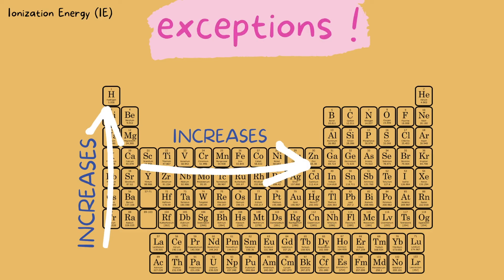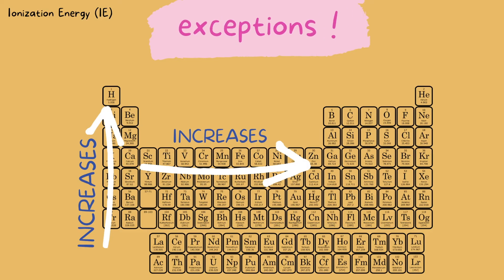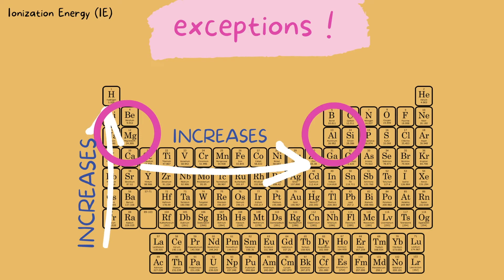Now, unfortunately, there are a few exceptions. I'm including these because I know a variety of students will be using this video to study. If you are in high school or college chemistry, you do need to know these exceptions. However, if you are here strictly for the TEAS exam, in my opinion, you don't need to know these. These exceptions involve beryllium, magnesium, and calcium, and also boron, aluminum, and gallium.